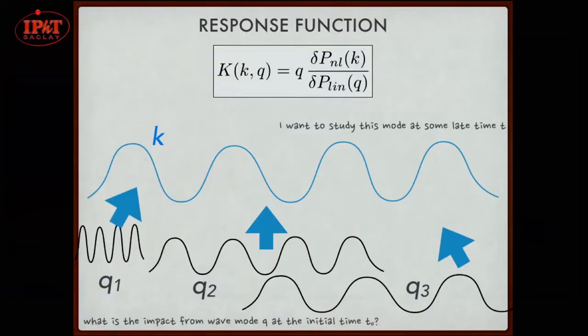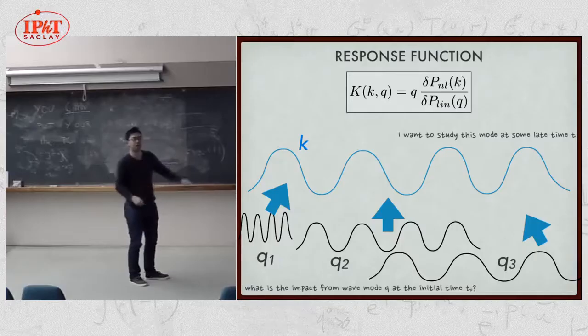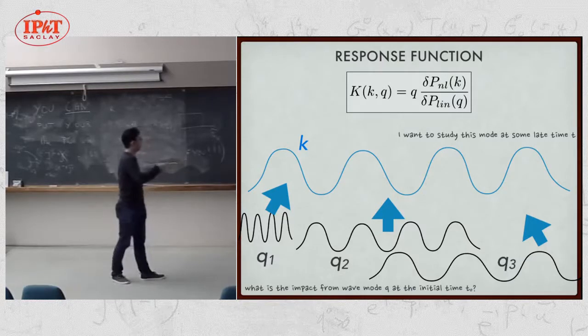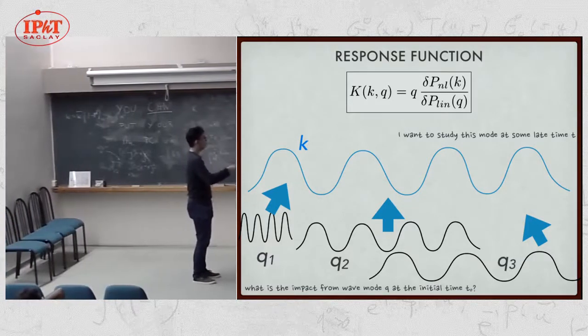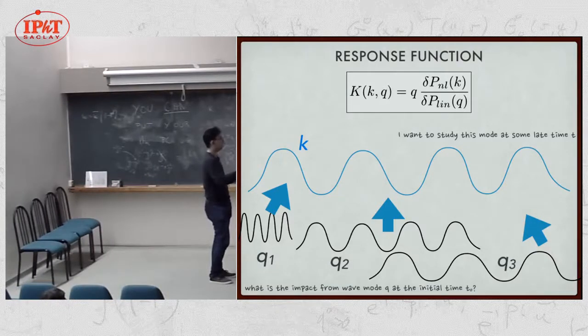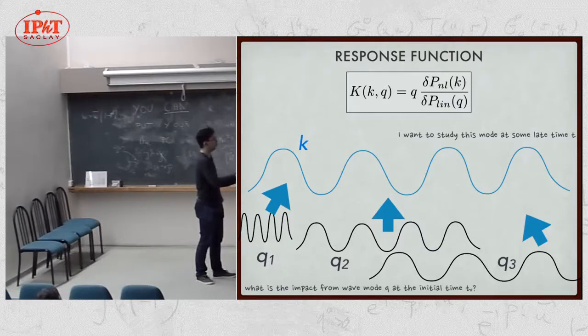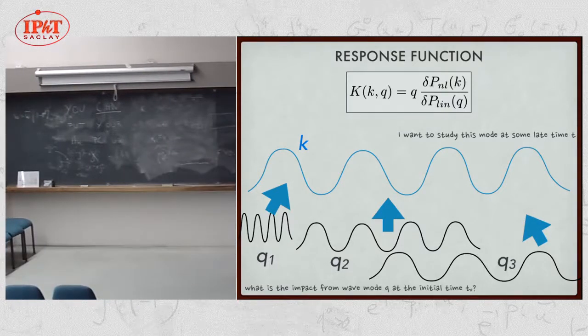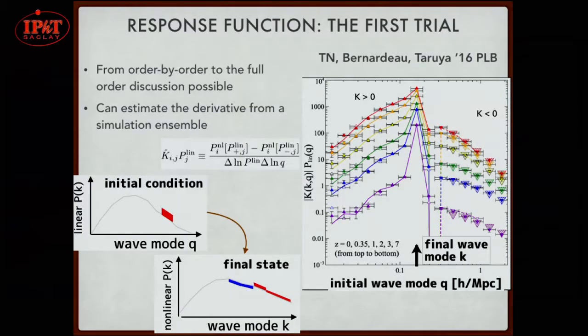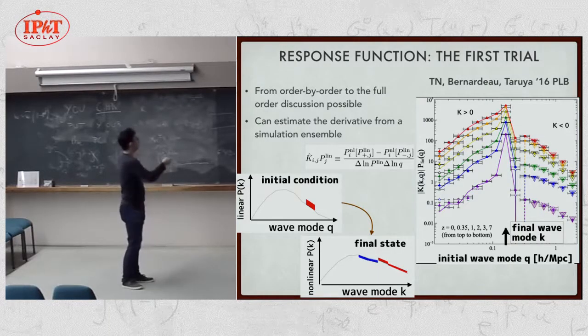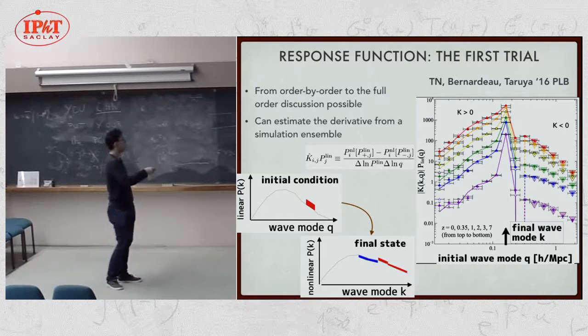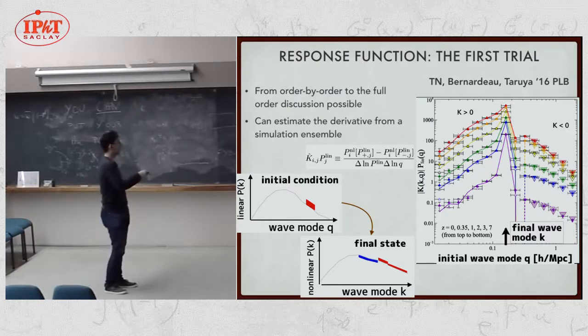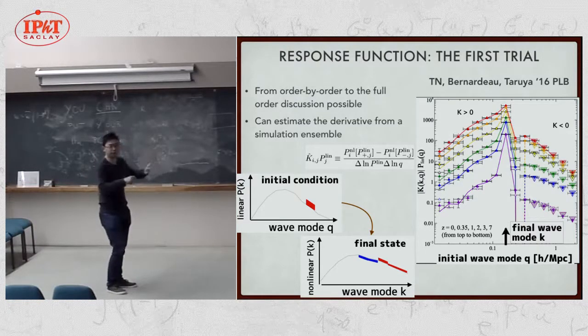I define response function. Maybe there are many different types of response function in this large scale structure community. Maybe Fabian has his different version of response function. But our response function is this. It is a functional derivative of nonlinear power spectrum with respect to the linear power spectrum. I want to study this wave mode, which is typically in BAO scale or whatever. Then, I ask myself, let's go back to the initial condition or linear power spectrum space. And I ask, what is the impact of initial density, initial fluctuations at various wave numbers Q1, Q2, Q3, to this one specific wave number K? To do this, very simple. I run a series of simulations with a slightly modified initial condition.